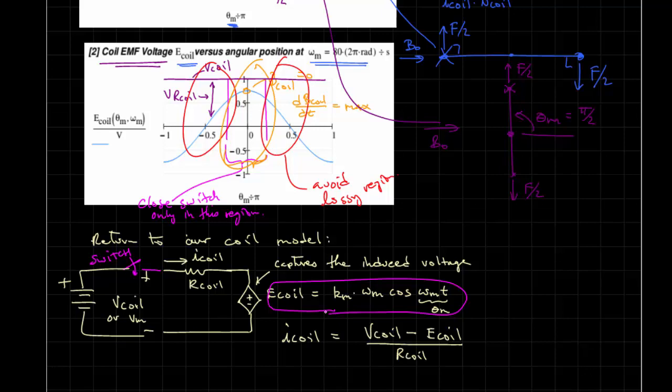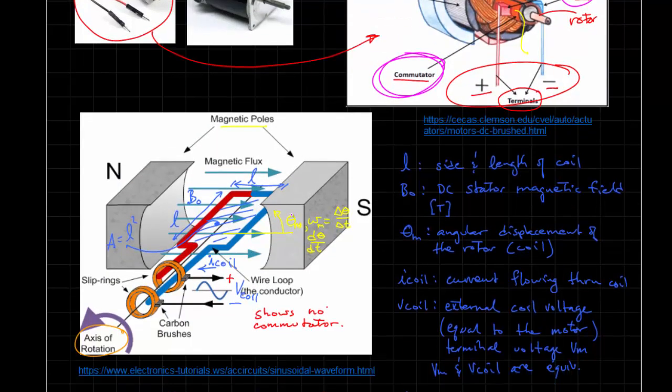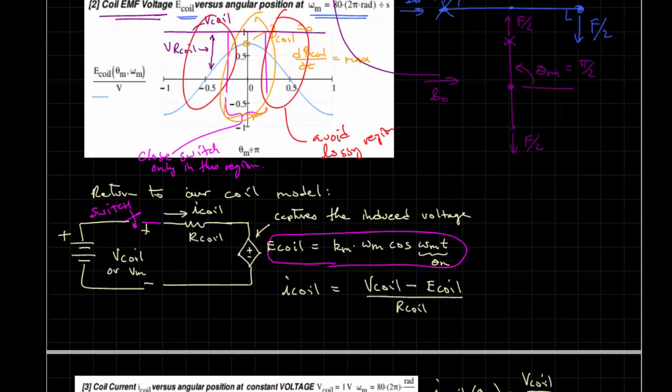This induced voltage is proportional to the motor constant and proportional to the speed of the motor. If you spin the motor twice as fast, the amplitude of the sinusoidal voltage produced will be twice as much. The voltage is sinusoidal — it's cosine omega_m t — where omega_m is the angular frequency of the motor, and omega_m is the time rate of change of theta_m.